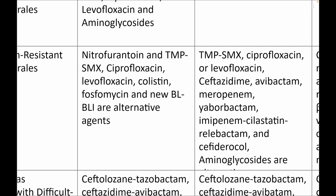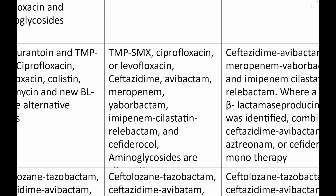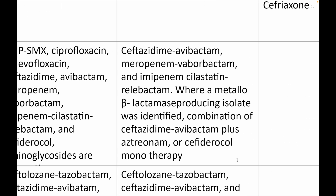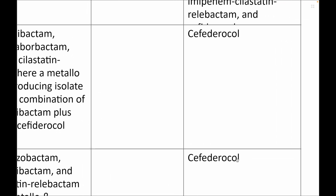If nitrofurantoin and trimethoprim are not working, escalate to fluoroquinolones, colistin, oral fosfomycin, or the newer BL/BLI agents. For UTI or pyelonephritis, go for trimethoprim-sulfamethoxazole, ciprofloxacin, levofloxacin, or the newer BL/BLI agents. For infection outside the urinary tract, always go for the newer BL/BLI agents: ceftazidime-avibactam, meropenem-vaborbactam, or imipenem-cilastatin-relebactam. If a metallo-beta-lactamase-producing isolate is suspected, add aztreonam to ceftazidime-avibactam, or give cefiderocol monotherapy. Cefiderocol is again the reserve drug.